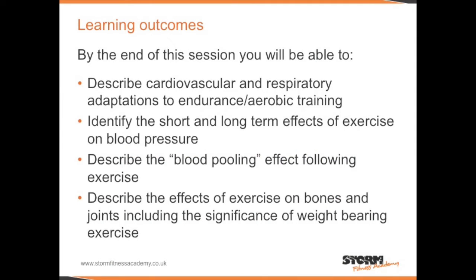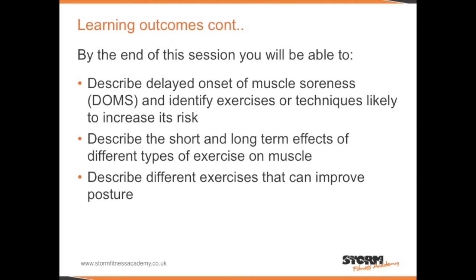By the end of this session, you will be able to: describe cardiovascular and respiratory adaptations to endurance and aerobic training; identify the short and long-term effects of exercise on blood pressure; describe the blood pooling effect following exercise; describe the effects of exercise on bones and joints including the significance of weight-bearing exercise; describe delayed onset of muscle soreness and identify exercises or techniques likely to increase its risk; describe the short and long-term effects of different types of exercise on muscle; and describe different exercises that can improve posture.